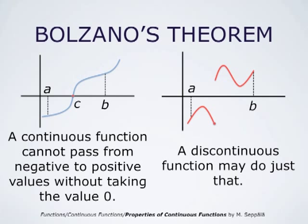Bolzano's theorem states that a continuous function cannot pass from being negative to positive without taking the value zero in between. A discontinuous function, as shown in the picture on the right, may do just that — it can take negative values and then jump to positive values without actually crossing the x-axis. This is the essence of continuity: a continuous function cannot do that.